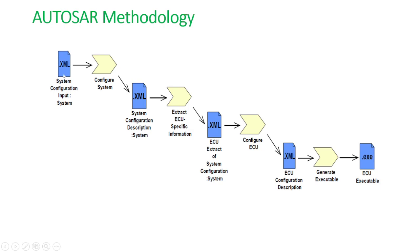Starting at the system configuration input — once you have a system configuration input, you go for configuring the system, and then you have the system configuration description as output. Then from the system configuration description, the description of each ECU is extracted, which is in the form of an XML. This ECU extract XML is given as input to the AUTOSAR configuration tool to configure the ECU. The output of the configure ECU step would be the ECU configuration description. Then you generate the executable and finally have the executable. Let's go a step further and understand more details of each step.